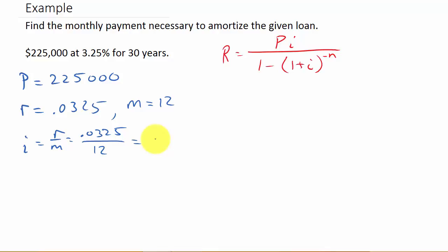Let's see, 0.0325 divided by 12 is 0.002708333. We don't want to write that down, so we'll leave it as a fraction. If you get three or four decimals, go ahead and write it out. But if your calculator is filled up with decimals, just leave it as a fraction. n is m times t, so m is 12 times 30, which is 360.